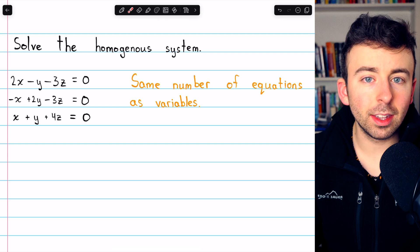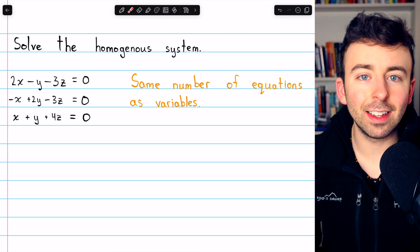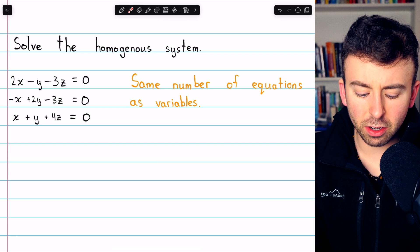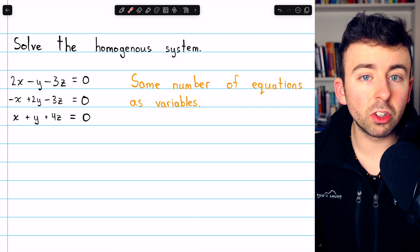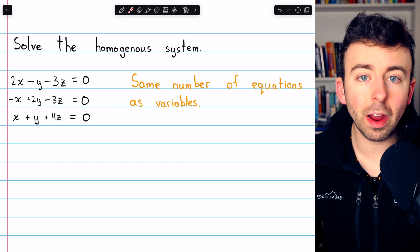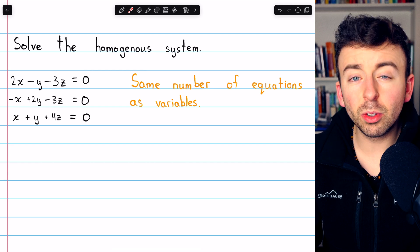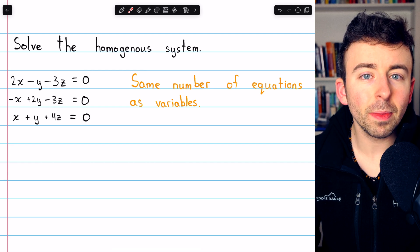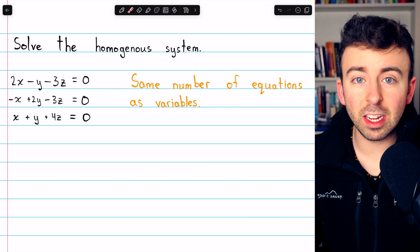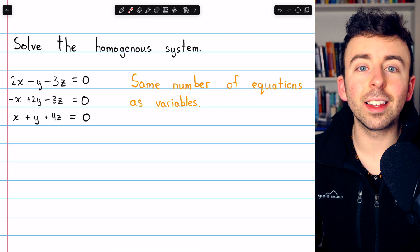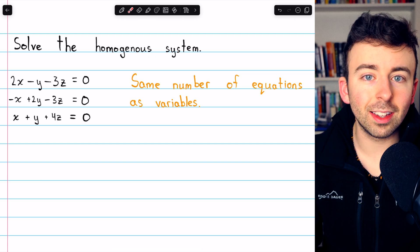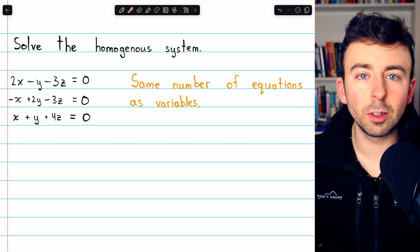So it may be the case that there are infinitely many solutions because it could be that two of these equations are equivalent, in which case perhaps we have more variables than we have restrictions. It's not possible that there are zero solutions because every homogeneous system is consistent.